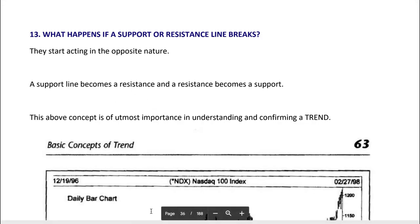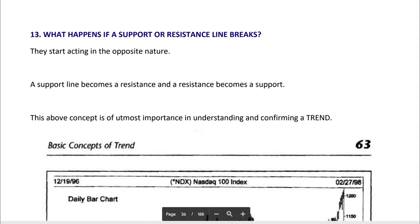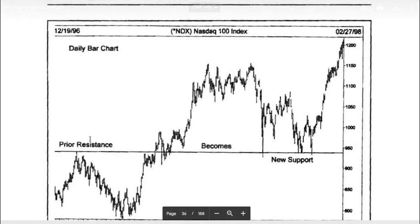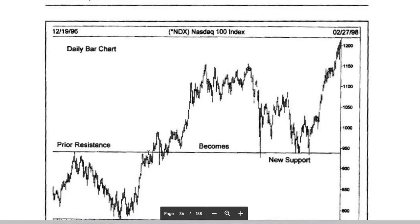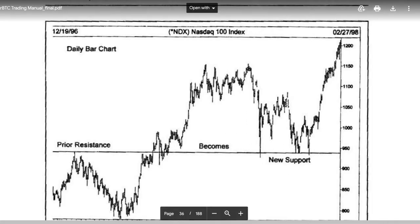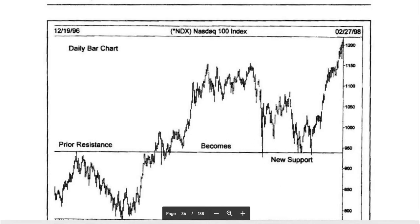What happens if a support or resistance line breaks? They start acting in the opposite nature — a support line becomes a resistance, and a resistance becomes a support. This line used to be a resistance, there was a breakout, retest, bounce, rally, and now it becomes a new support. Same for support: if you break the support, it becomes resistance.